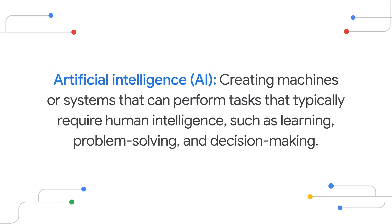Let's start with the big picture. Artificial intelligence, or AI, is all about building or creating machines that normally require us humans to use our brains — like learning, problem solving, and decision making.